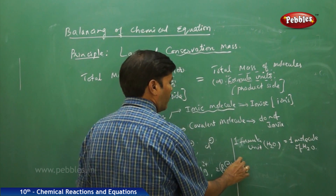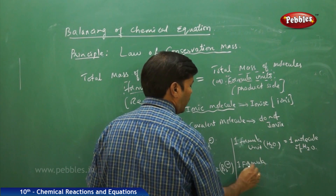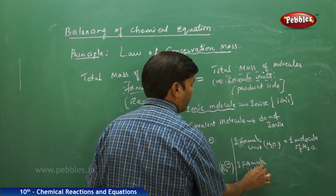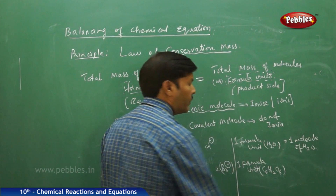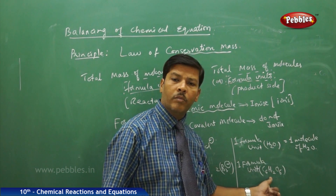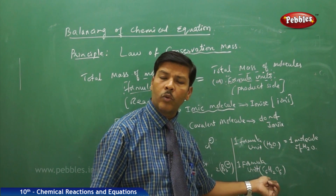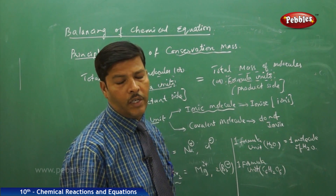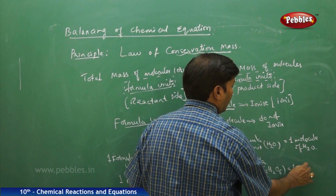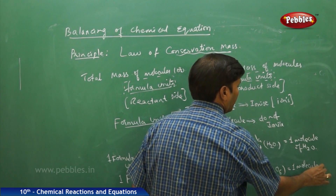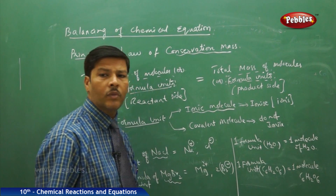Similarly, one formula unit of glucose — because glucose is a pure covalent compound and a non-polar compound, the glucose molecule will never ionize and cannot give any ions. That is why one formula unit of glucose can be considered as one molecule of glucose.